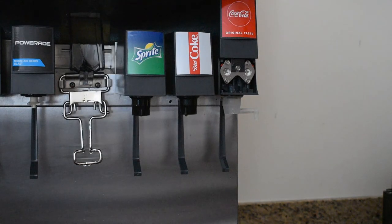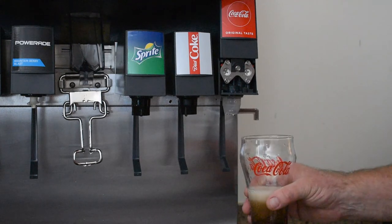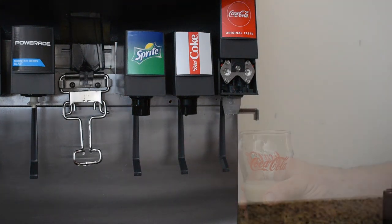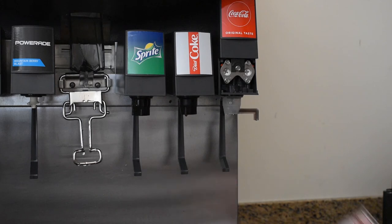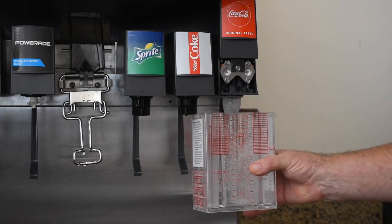When the water flow rate is correct, we can now check the ratio. First, we must prime the separator. Place your cup under the syrup separator. Activate the valve until the two liquids are in the grid area.